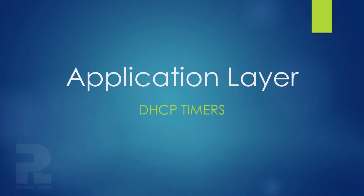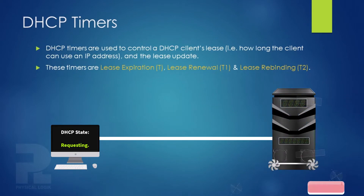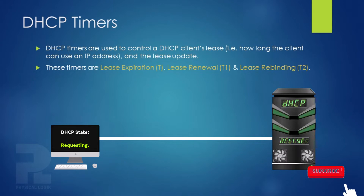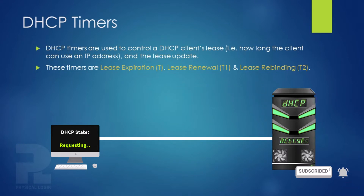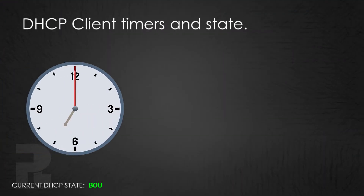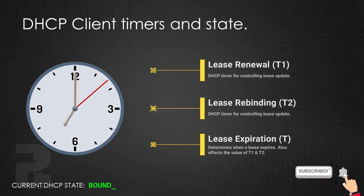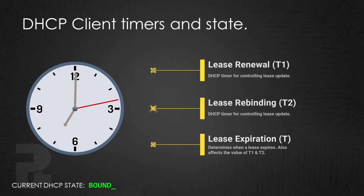Hello guys, we'll talk about DHCP timers. A DHCP client that has obtained IP configuration parameters from a DHCP server with no IP conflict will initialize its TCP/IP protocol stack with the new configuration and enter a binding state with the server. It will also set three timers to monitor the process of lease renewal, lease rebinding, and lease expiration. These values may be requested by the client during the exchange process or specified in the server configuration.